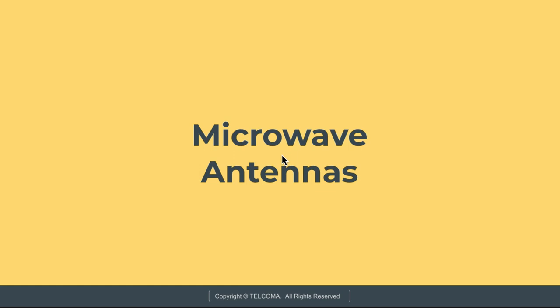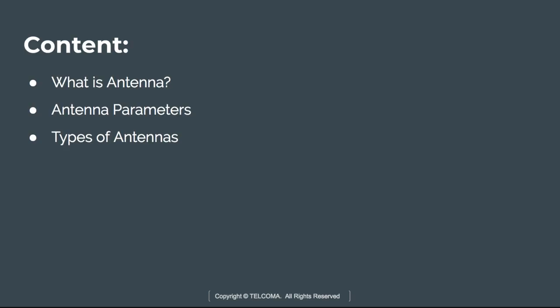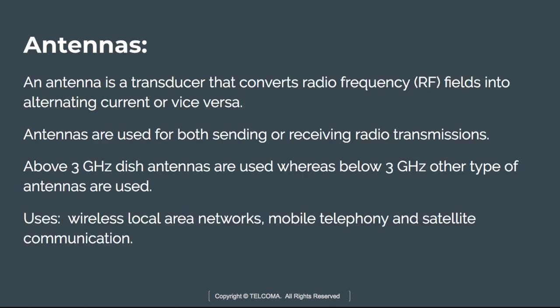Welcome to the microwave course. Today we are going to discuss microwave antennas. In this class we will learn about what is an antenna, the antenna parameters, and the types of antennas. An antenna is a transducer that converts radio frequency fields into alternating current, or vice versa. Antennas are used for both sending and receiving radio transmissions.